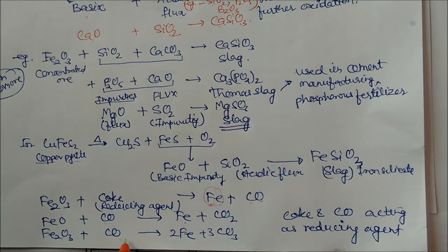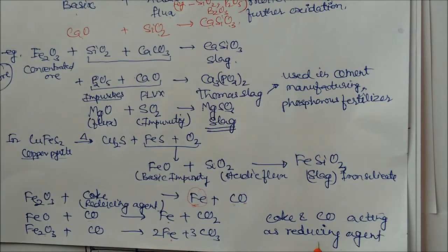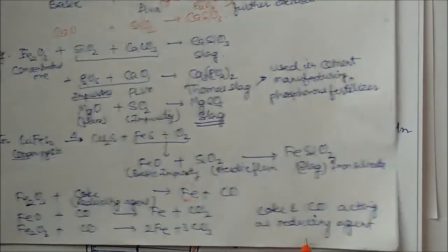Again, iron oxide combined with the carbon monoxide can give you iron plus carbon dioxide. So in every case, oxide is usually removed by the carbon monoxide. So coke and carbon monoxide is acting as a good reducing agent. So this is the process of smelting.